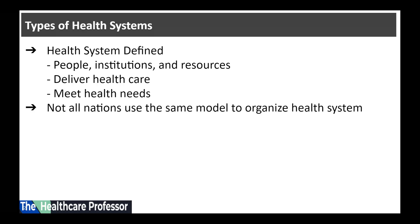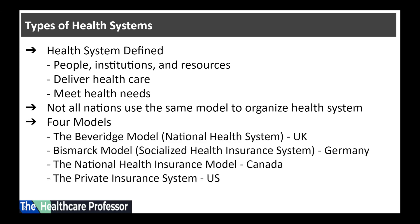Not all nations use the same model to organize their health system. In fact, there are four major types of health care systems. These four models are: the Beveridge model, also known as the national health system — an example of a country using the Beveridge model is the United Kingdom. The second model is the Bismarck model, also known as the socialized health insurance system, used in Germany.